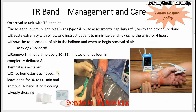Now let's see the management when a patient comes to your unit with TR-BAN on. You have to assess the puncture site — look for any bleeding and whether it's clean and dry. A trace amount of blood at the puncture site when the sheath is removed is normal, but this bleeding should not increase with time. Get the first set of vital signs.